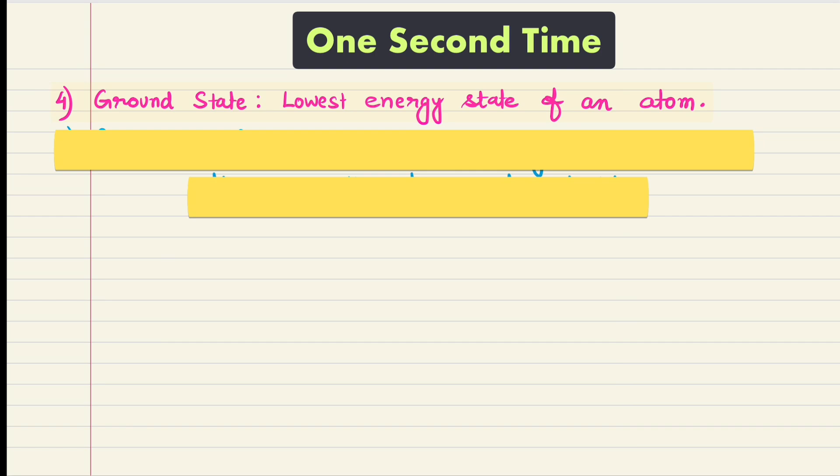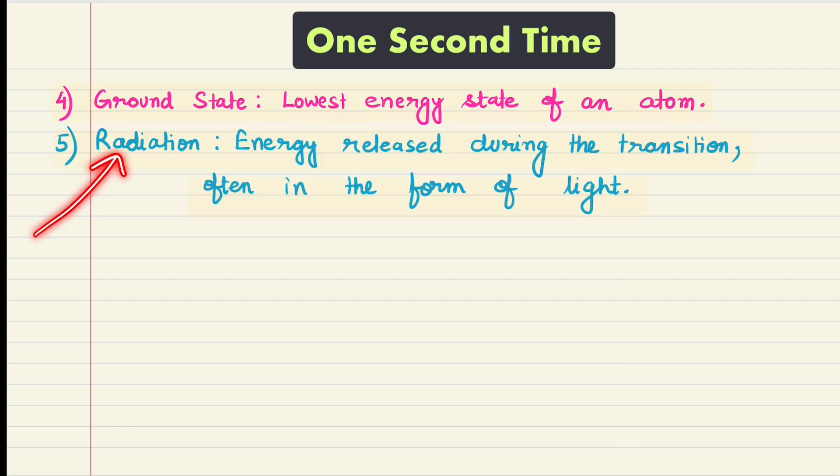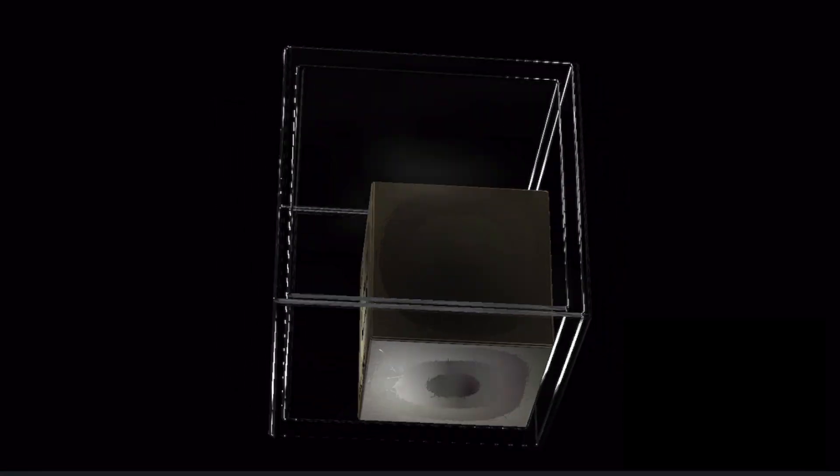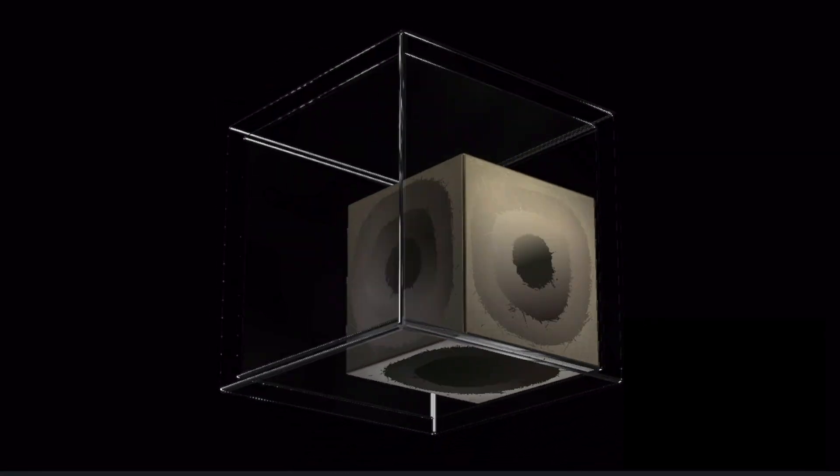At number four, we will define the meaning of ground state. Ground state is the lowest energy state of an atom. And lastly, we are defining radiation, which means the energy released during the transition from a lower energy level to a higher energy level, which often takes place in the form of light.